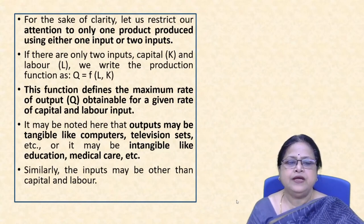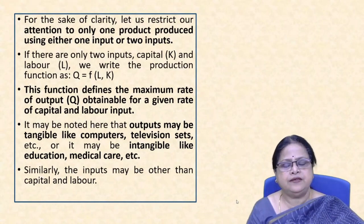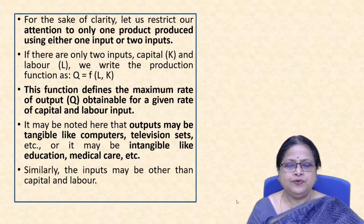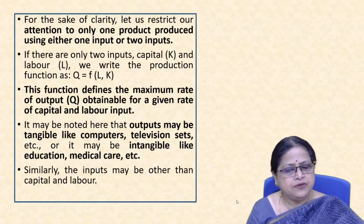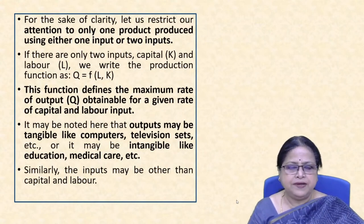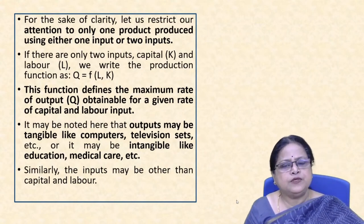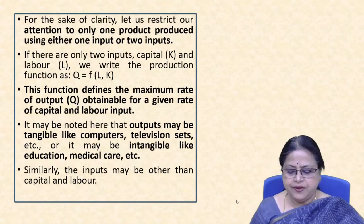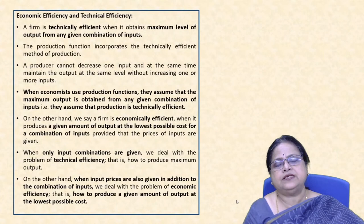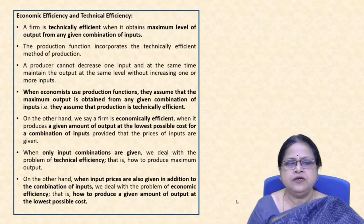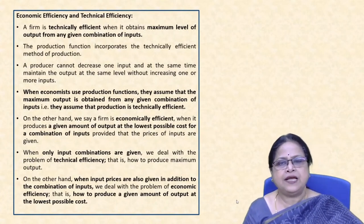This function defines the maximum rate of output obtainable for a given rate of capital and labour input. Outputs may be tangible, like computers and television sets, or intangible, like education and medical care. Similarly, inputs may extend beyond capital and labour, but for simplification we keep capital and labour as the two inputs for producing one particular type of output.